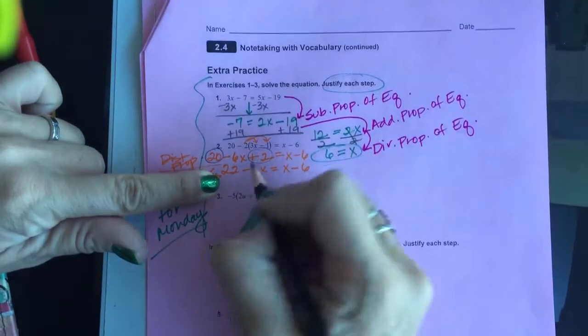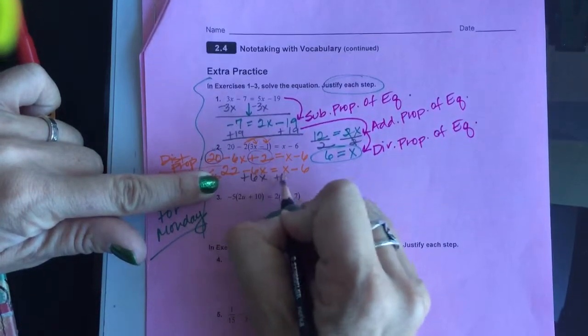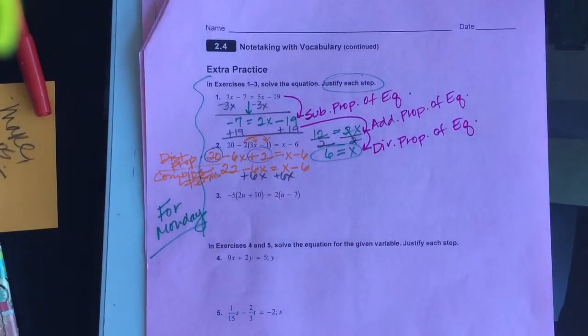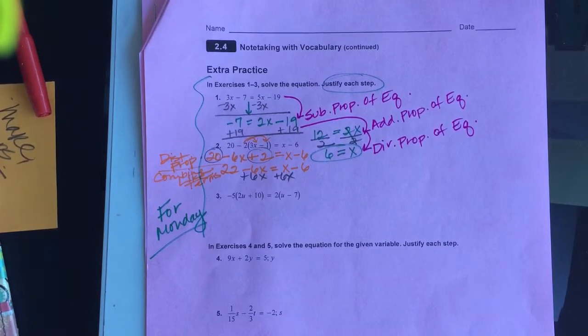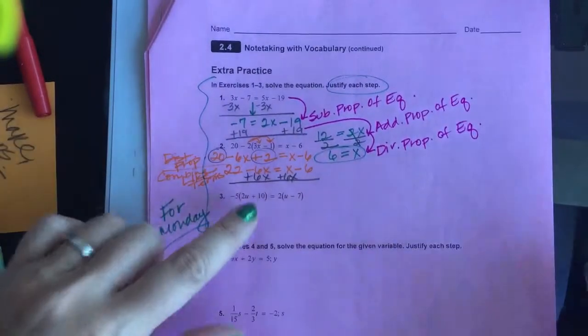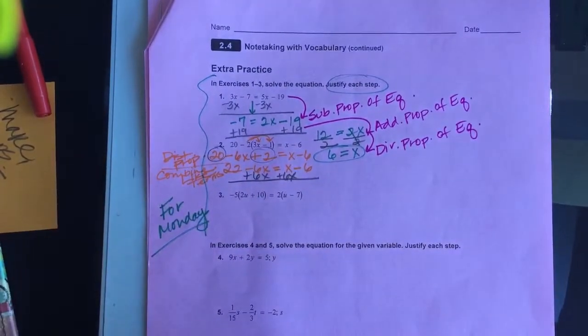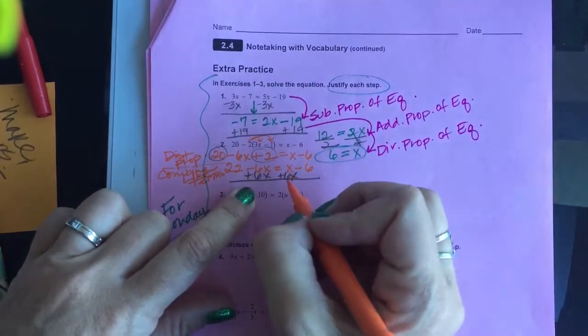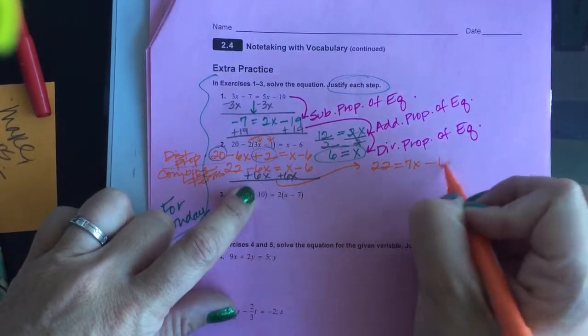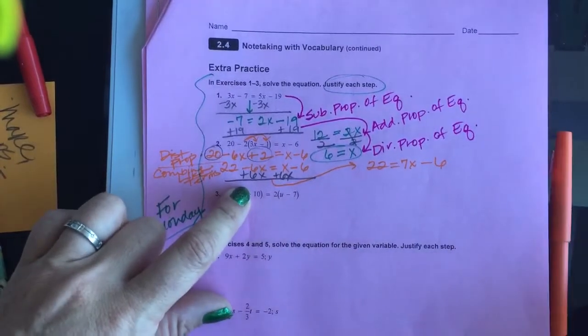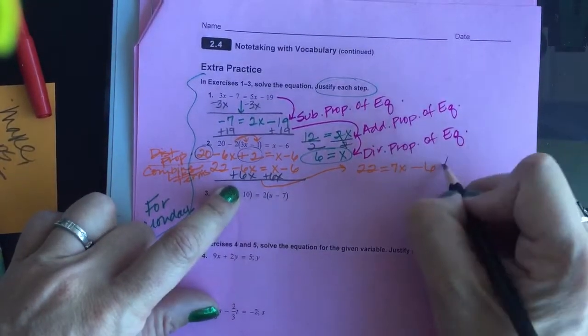I'm going to add 6x to both sides. That's the addition property of equality. So right now, that is going to leave me with, that's an addition property, and it's going to be, I'm going to come over here, 22 equals 7x minus 6, and I can justify that with addition property.